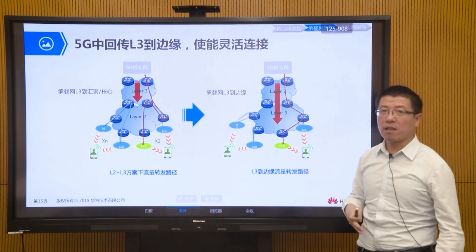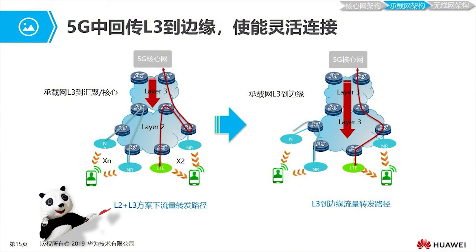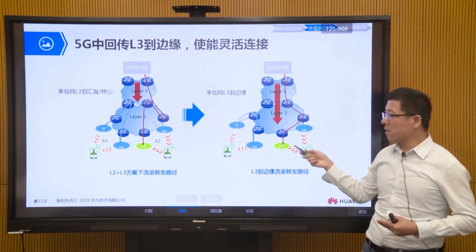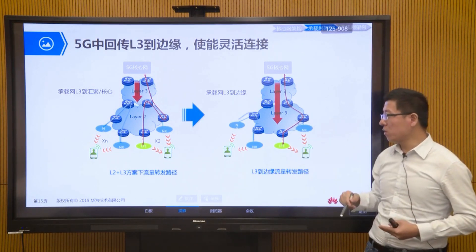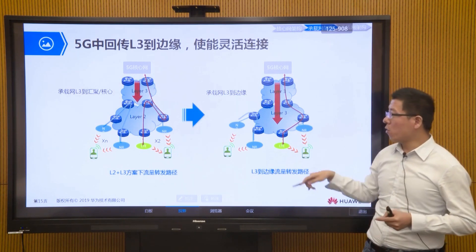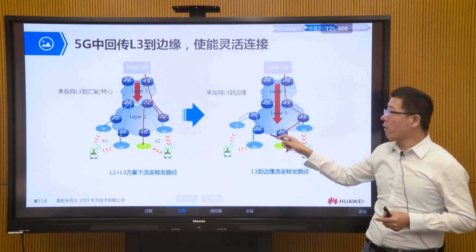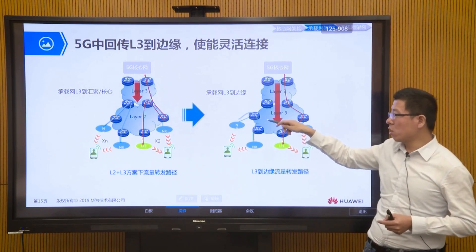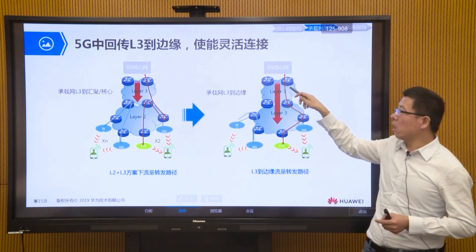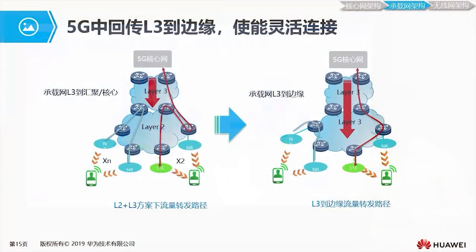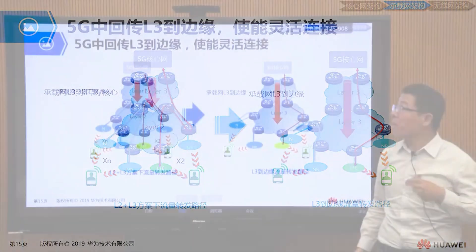With inter-station data forwarding now handled directly on the access ring device, for example two NR 5G stations can communicate directly through the access ring device to achieve Layer 3 communication. This reduces delay, reduces traffic on the convergence ring and core ring since data is consumed locally, and makes networking more flexible for new business scenarios.